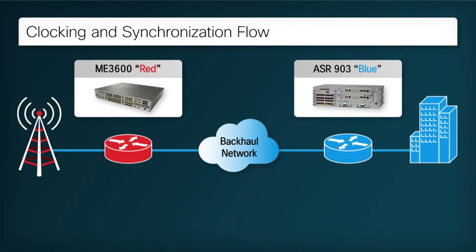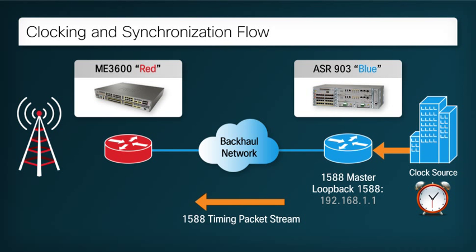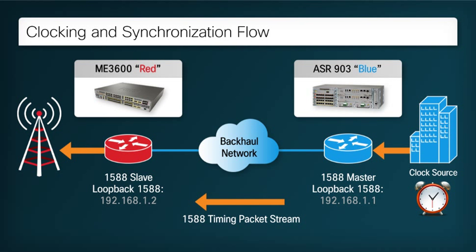Since we are introducing a packet-based transmission medium between the cell site and the POP, we need to transfer frequency synchronization through some other method. For this solution, we will use IEEE 1588, also known as the Precision Time Protocol or PTP version 2. With this technique, the equipment in the POP will provide the clocking to BLUE, the pre-aggregation router. BLUE will recover the clock from the TDM circuit, then become a 1588 master and provide packet-based synchronization over the backhaul network to RED, which will be configured as a 1588 slave. RED, as a PTP slave, recovers the frequency from the packet stream and uses that frequency to become the clock master for the TDM circuits to the equipment in the remote cell site. Now that we have described the solution, let's take a look at each of the components.